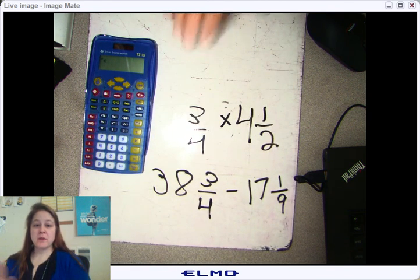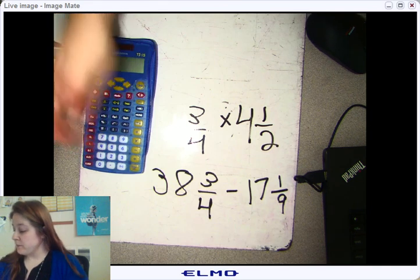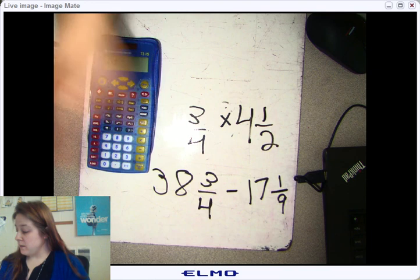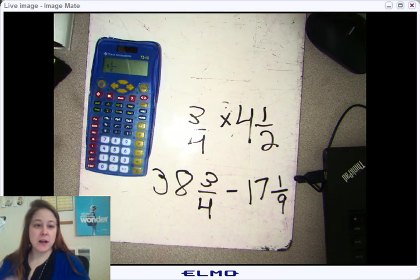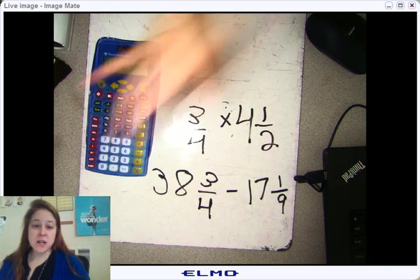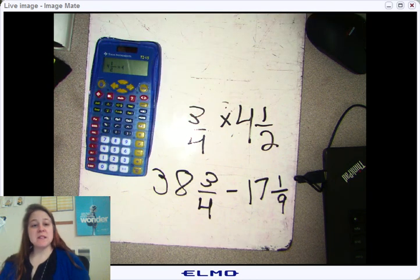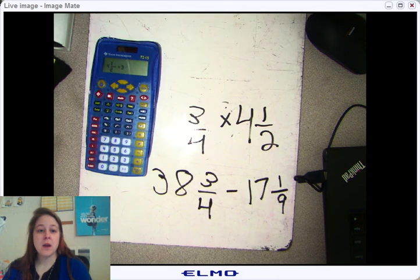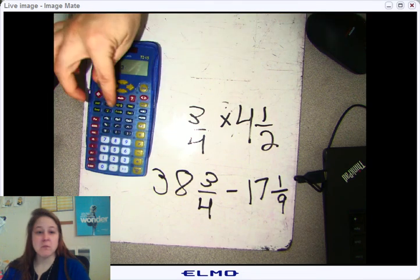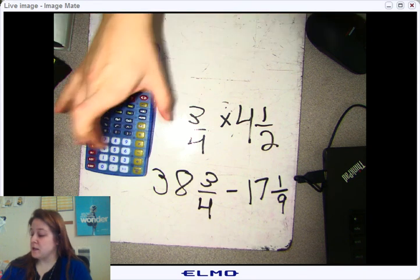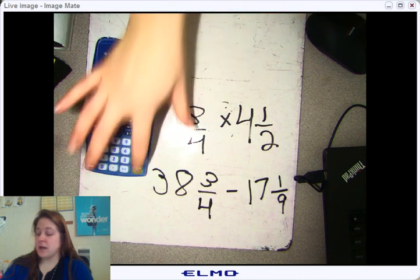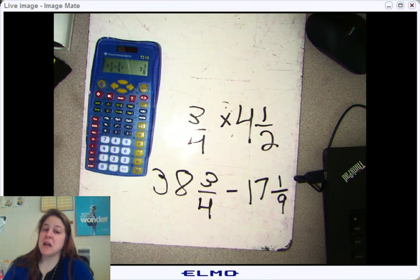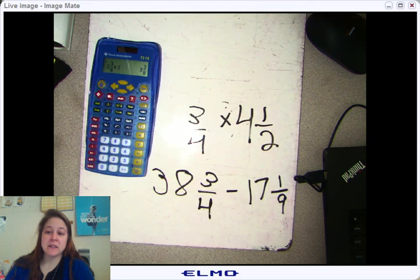Let's try three and one-fourth times four and a half. I'm going to hit four, hit Unit, hit one, hit N, hit two — that's my four and a half. Hit the multiplication sign. Now, what if you don't want a mixed number and just want a regular fraction? You don't have to hit Unit. Hit three, then the N button — it automatically makes a fraction. Hit Enter and you get three and three-eighths. You can hit the Simplify button to make sure it's completely simplified.